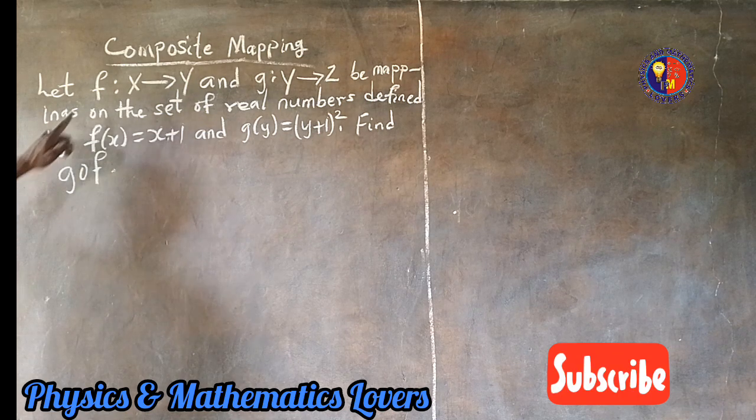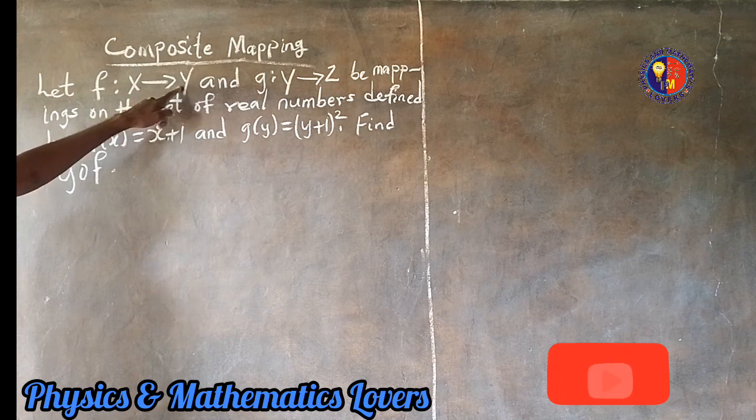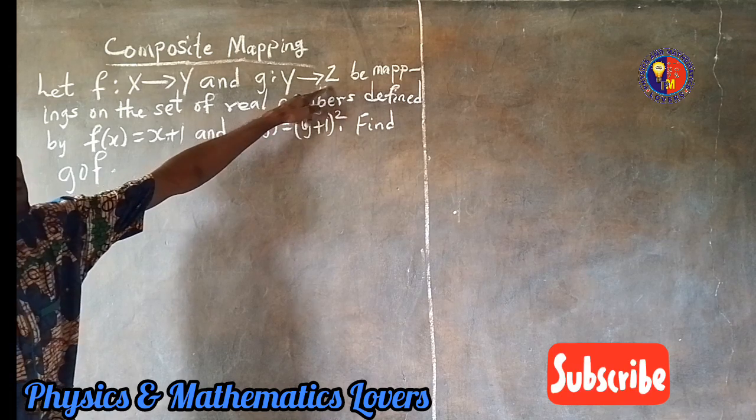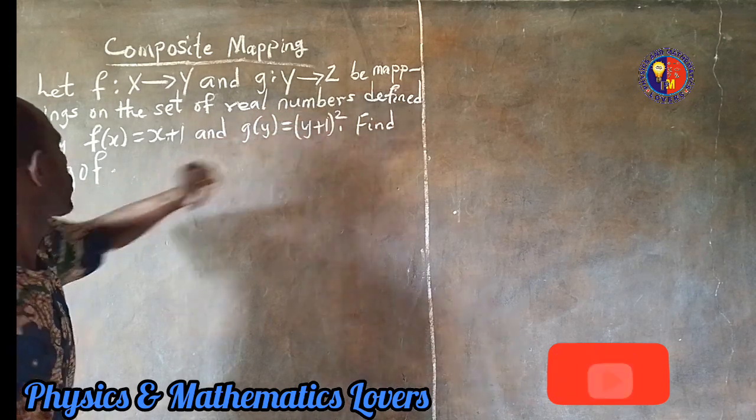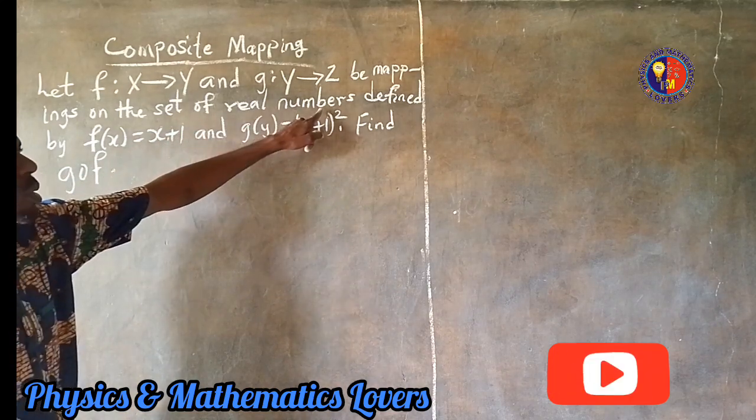The question reads: let f be a function defined on x mapped to y, and g is a function defined on y mapped to z. Build mappings on the set of real numbers defined